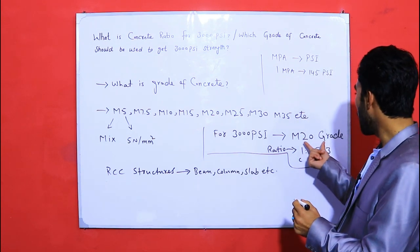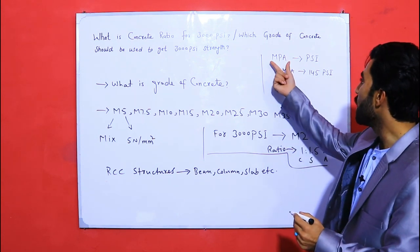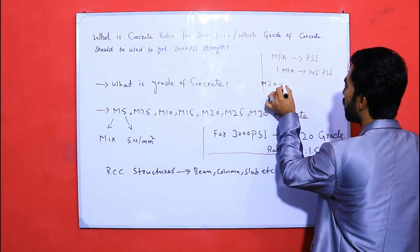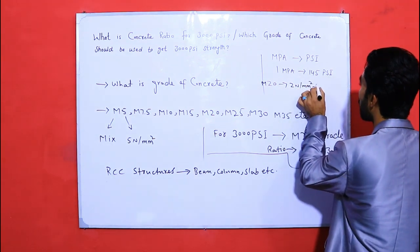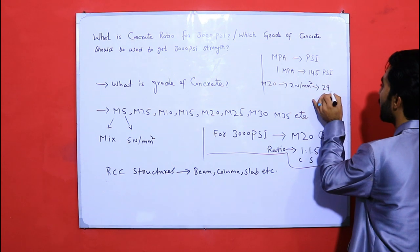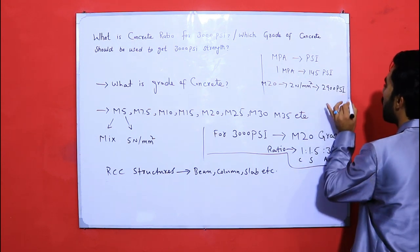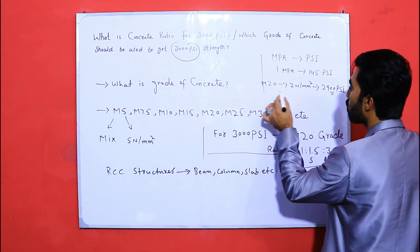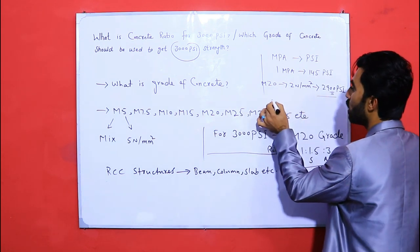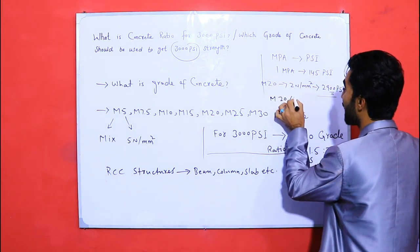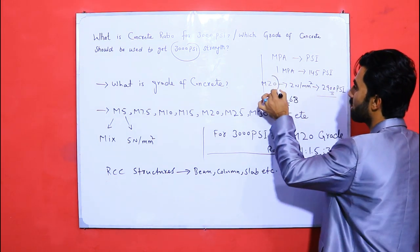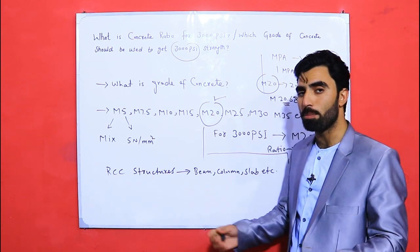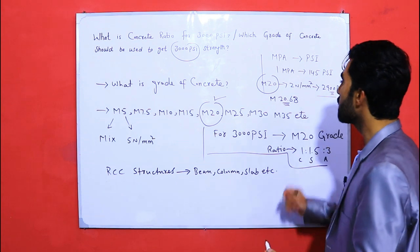M20 means 20 Newton per mm² compressive strength. When you convert 20 MPa to PSI, it becomes approximately 2900 PSI. Since we require 3000 PSI, you technically need M20.68, but M20 is the suitable and commonly used grade for 3000 PSI strength in beams, columns, slabs, and other civil engineering structures.